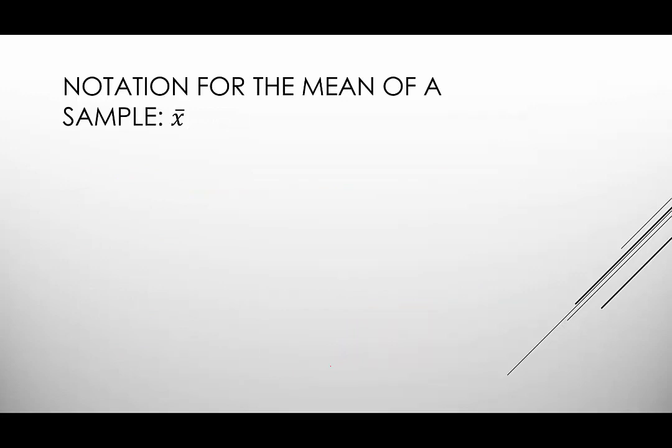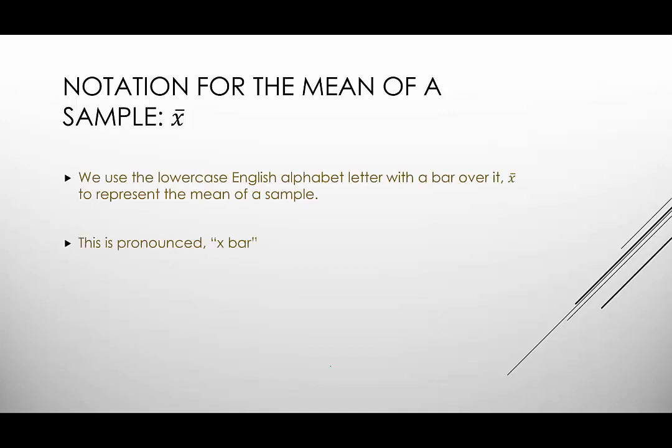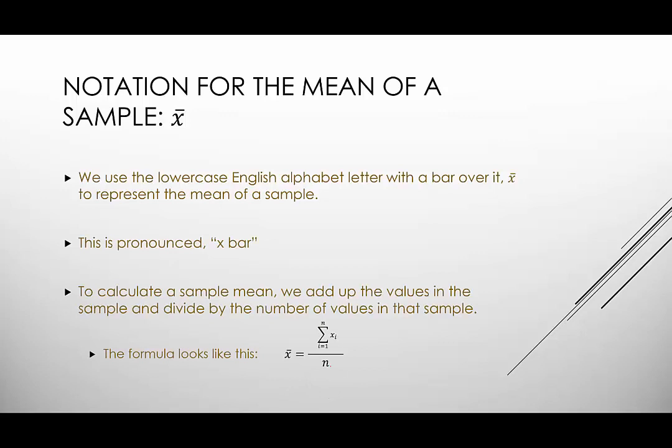The notation for the mean of a sample is x bar. So it's an English letter x with a bar on top of it and it's pronounced x bar. To calculate a sample mean it's the same thing. We add up all the values and we divide by the number of numbers. So this looks really scary but really it's not that bad. It's just a summation. And then we divide by the number of numbers, which would be whatever n is our sample size.